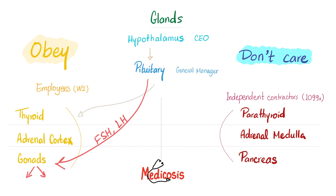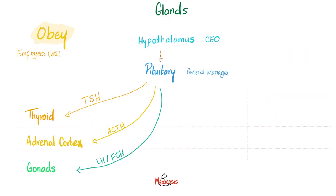How does the anterior pituitary secrete FSH and LH? It does so under an order from the hypothalamus — gonadotropin-releasing hormone (GnRH). The hypothalamus secretes GnRH, which goes to the anterior pituitary and tells it to secrete the gonadotropins, FSH and LH, which then go to the gonads.